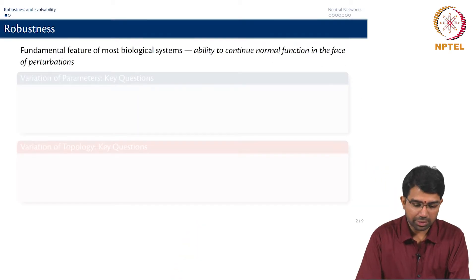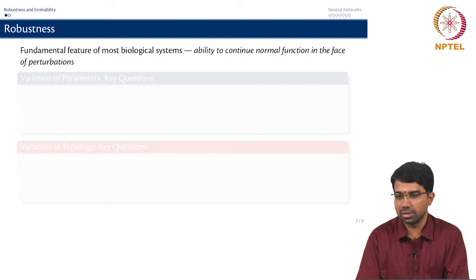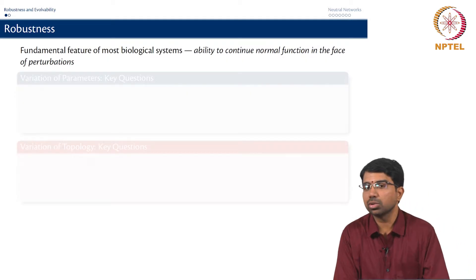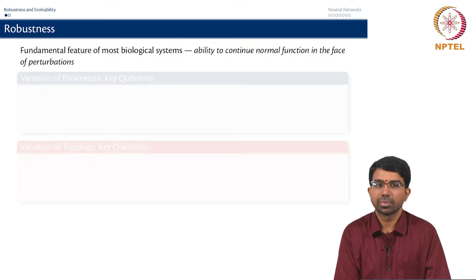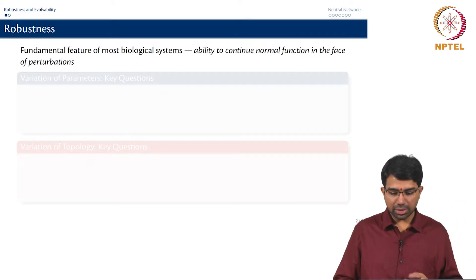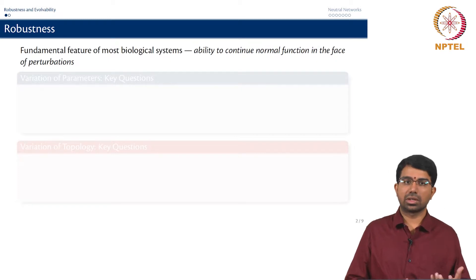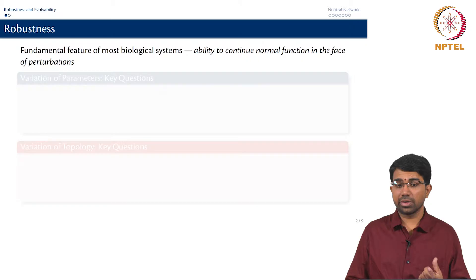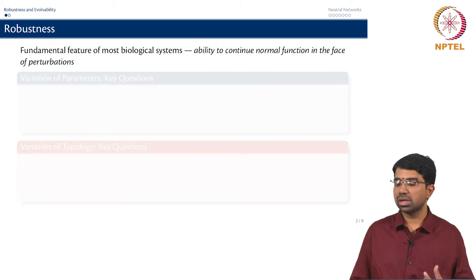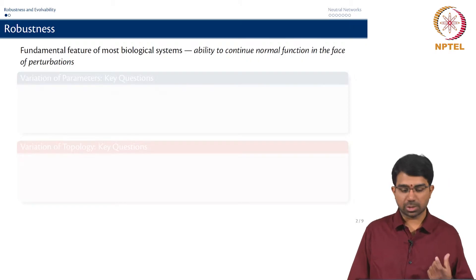Robustness, as we saw in the previous class, is a fundamental feature of most biological systems — it is the ability to continue normal function in the face of perturbations. And as we discussed earlier, it is the ability to continue a certain set of functions, not all functions. So you always have to define what features are going to be robust and to what perturbations the robustness is expected.